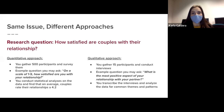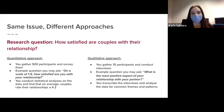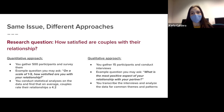Looking at an example: if we wanted to know how satisfied couples are with their relationship, a quantitative approach might gather 500 participants and survey them with a question like, on a scale of 1 to 5, how satisfied are you with your relationship? We would then conduct statistical analyses and find that, on average, couples rate their relationships a 4.2. If we took a qualitative approach, we might gather 15 participants and conduct interviews, asking something like, what is the most positive aspect of your relationship with your partner? We would transcribe the interviews and analyze the data for common themes and patterns. Notice we ask open-ended questions in qualitative research to gather more information.